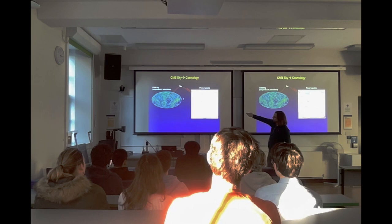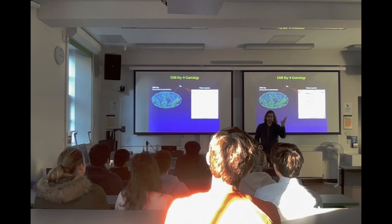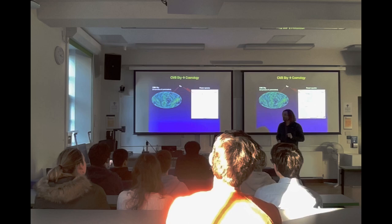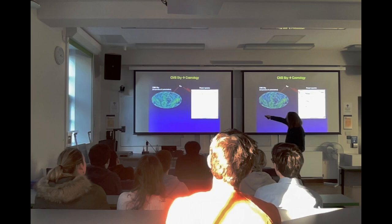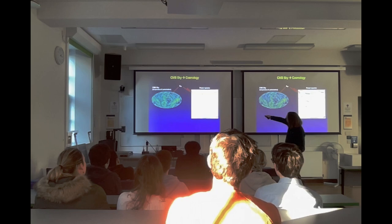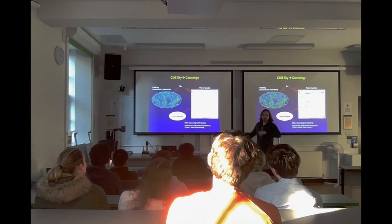We can do this analysis both in temperature — measuring the intensity on the sky — and in polarization, asking in which direction the light oscillates. This gives the E-mode polarization power spectrum, and cross correlations between temperature, E-modes, and B-modes. The theoretical curves are calculated using Boltzmann codes for cosmological perturbations, such as CAMB and CLASS. By comparing observations to these theoretical predictions, you can determine the parameters of the universe.